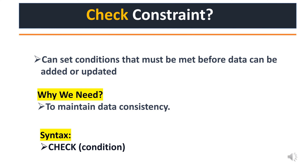What is a check constraint? With the check constraint, you can set a condition that must be met before data can be updated or added. For example, consider a gender column with values male and female. Before inserting or updating data, it will check whether the value matches the constraint. If a user enters a random value like 'ABC', those records will not be stored.